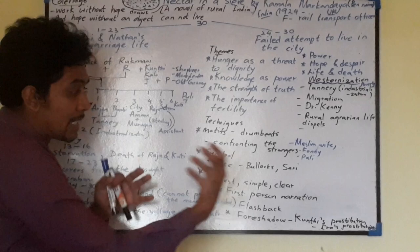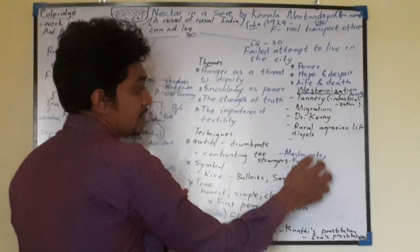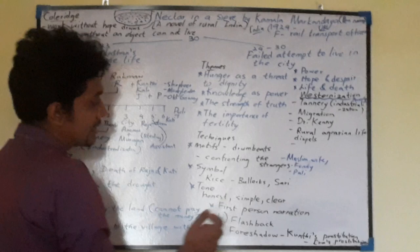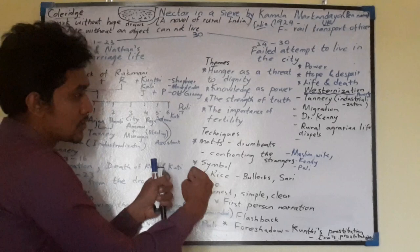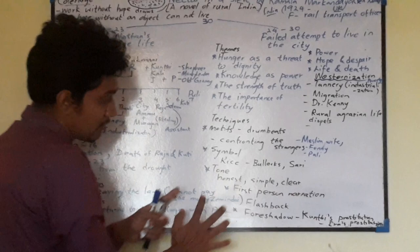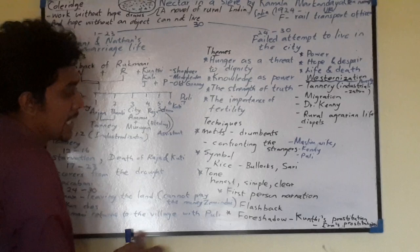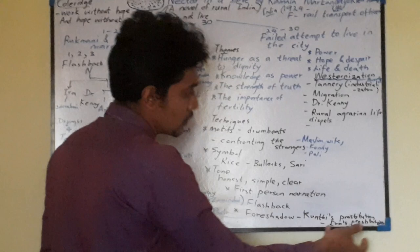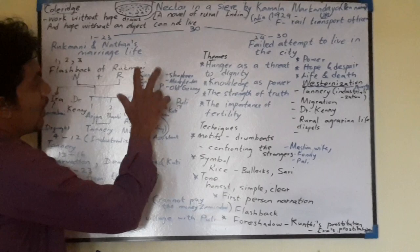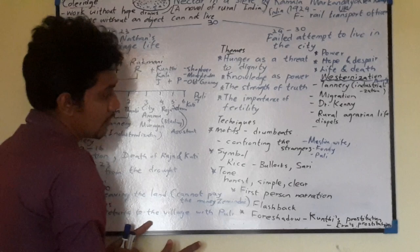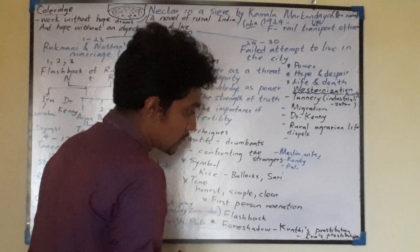Some of the literary techniques and motifs include drumbeats, which carry a kind of message throughout the story. Confrontation with strangers is also a significant feature — confrontation with the Muslim wife, Kenny, Puli, and others. Symbols and imagery symbolize certain flourishing in nature. The tone is honest, simple, and clear. It uses first person narration giving Rukmani's flashbacks. Another technique is foreshadowing — neighbor women like Kunti, Kali, and Janaki are present in the story, giving a feminist angle. Kunti's prostitution foreshadows Ira's prostitution later in the novel.